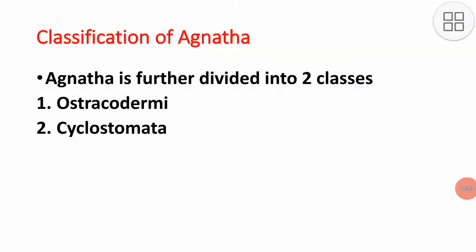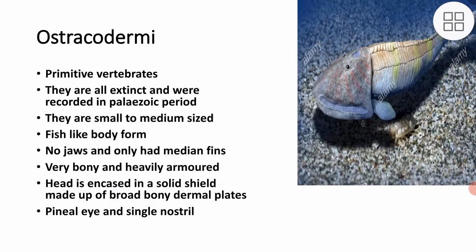In this video session we will be doing the classification of Agnatha. Agnatha is further divided into two classes: Ostrachodermi and Cyclostomata.